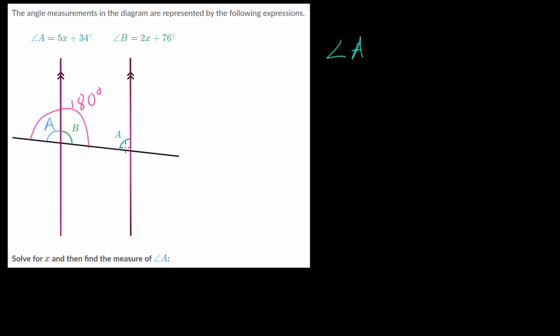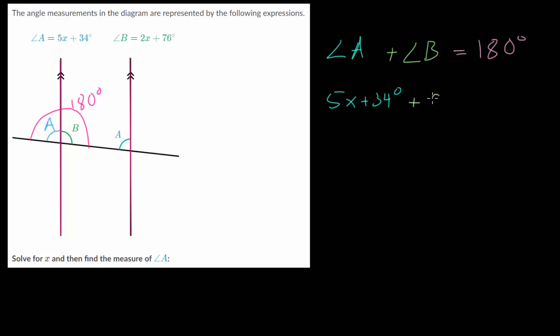When A and B are on the same side of the transversal and on the interior, they are supplementary, so we add them together and set them equal to 180 degrees. We have angle A plus angle B equals 180 degrees. Now let's plug in our expressions: angle A is 5x plus 34 degrees, and angle B is 2x plus 76 degrees, all equal to 180 degrees.